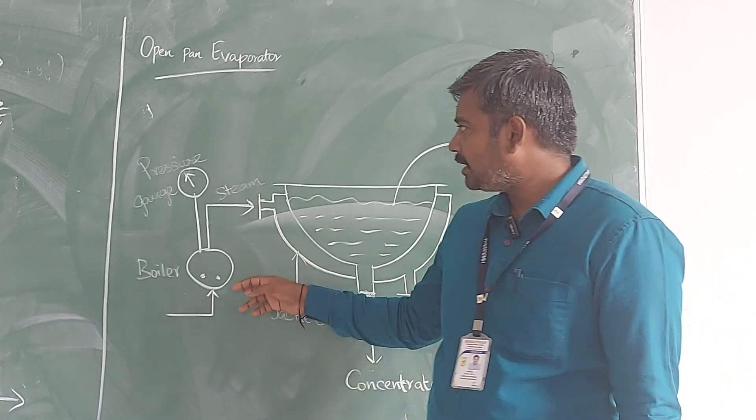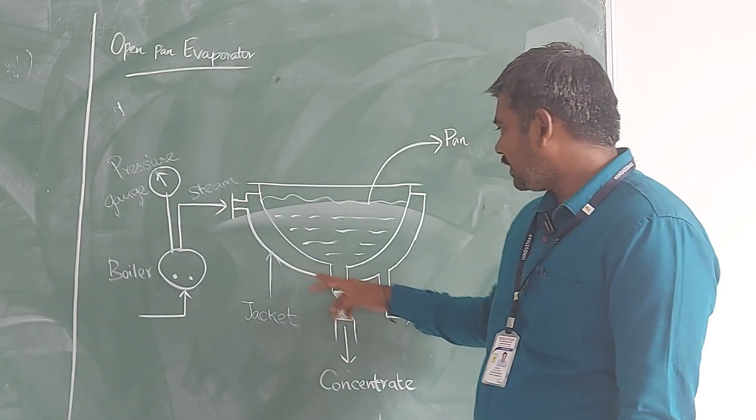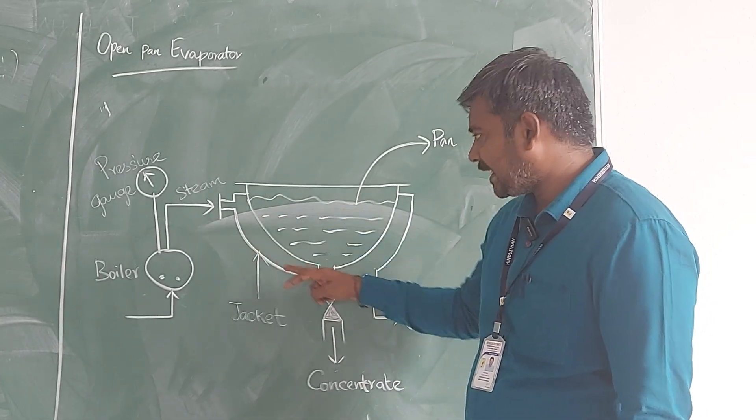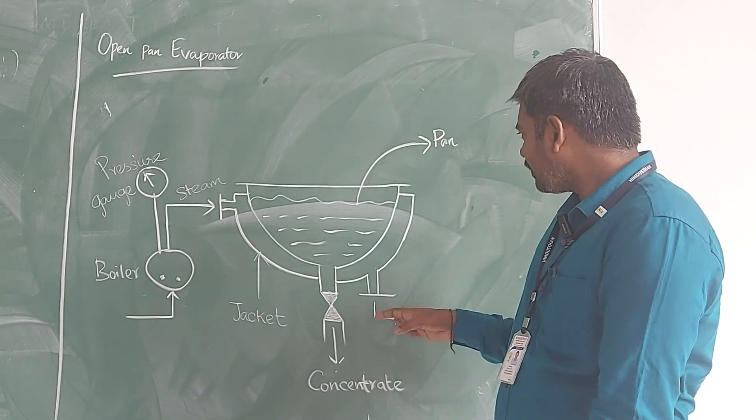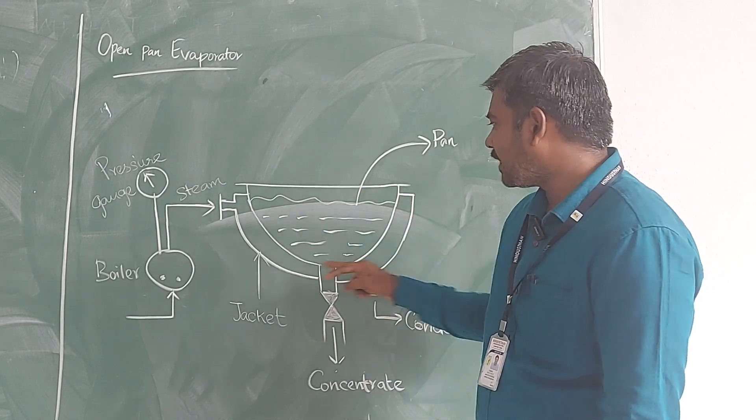We have a boiler which will be connected with the pressure gas and here we have some vessel which consists of the water covered with a jacket. Jacketed indicates insulation. And we will be having an outlet for the concentrate and condensate and this is your pan.